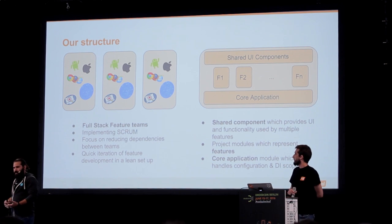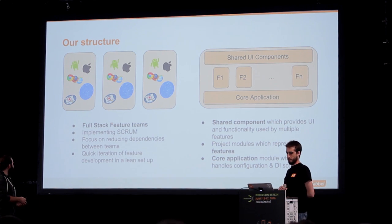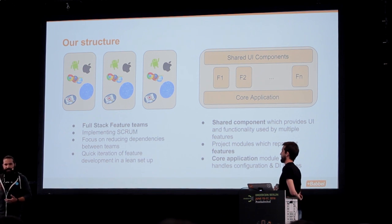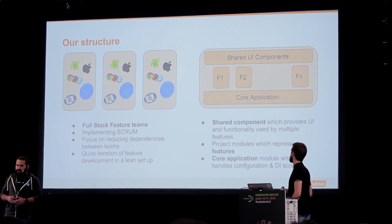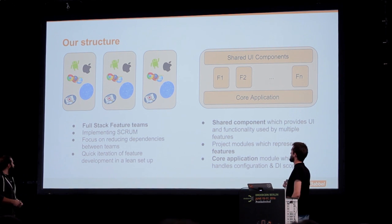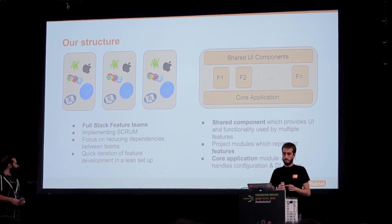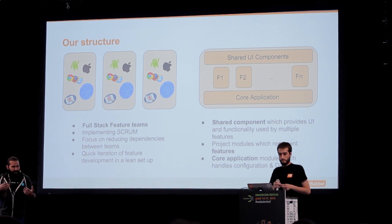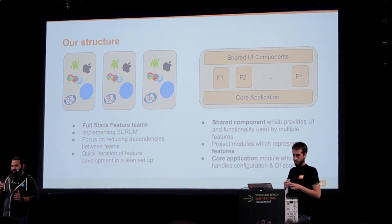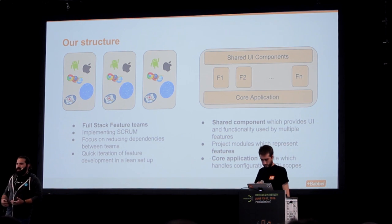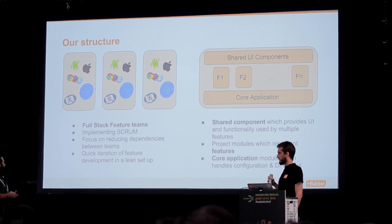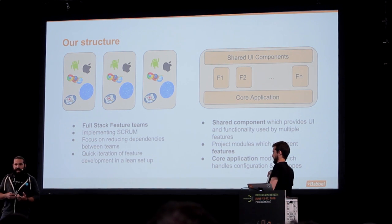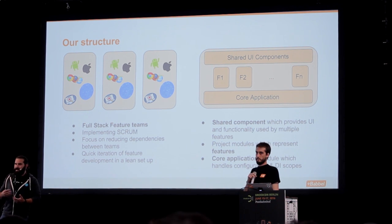So how do our teams look right now? We have full-stack teams which contain Android, iOS, frontend, backend developers, designers, and product owners. We're implementing Scrum. We focused on this change to reduce the dependencies between the teams, avoid the overhead of communicating and aligning, and just deliver code and deliver features in a lean way. We believe by now that we have achieved it to a great extent.